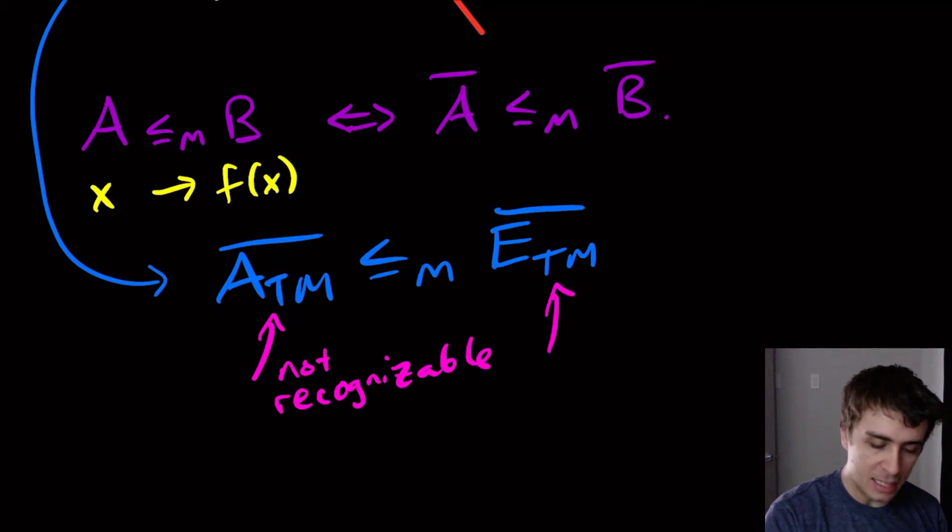And this thing over here is recognizable. And why is the thing on the right recognizable?